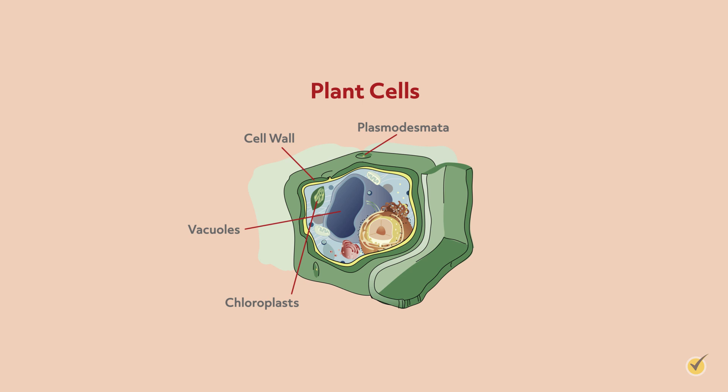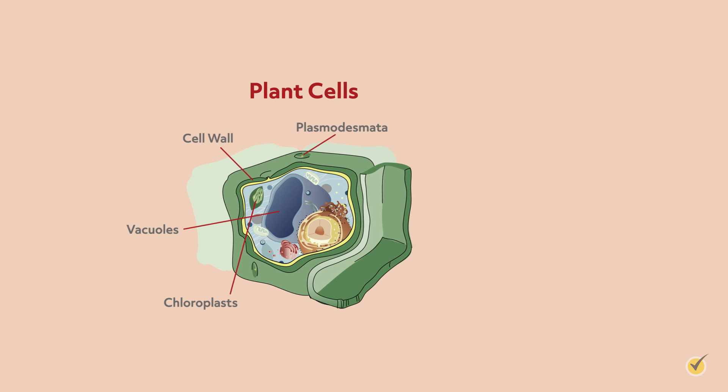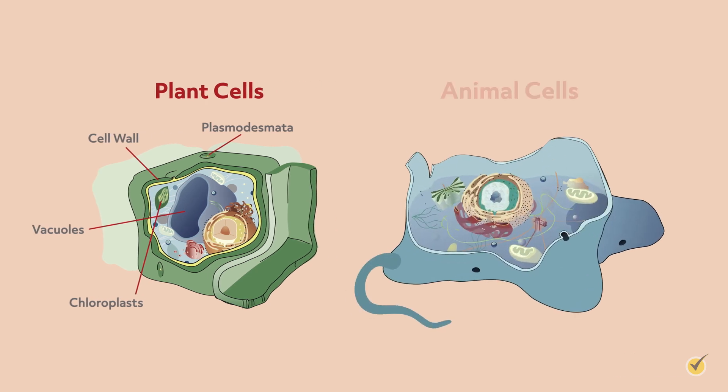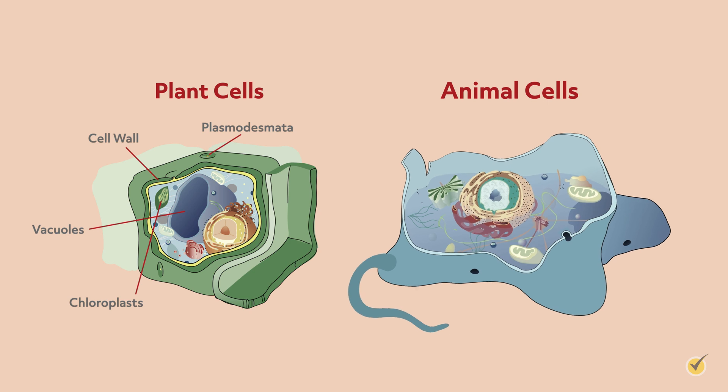Animal cell size varies a lot depending on the tissue type, but overall animal cells are smaller than plant cells. Now that we've gone over the similarities and differences of both cell types in terms of their structure, components, and size, let's talk about how each cell type metabolizes energy.